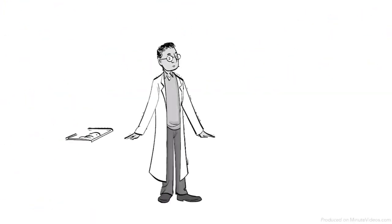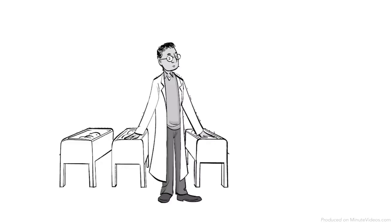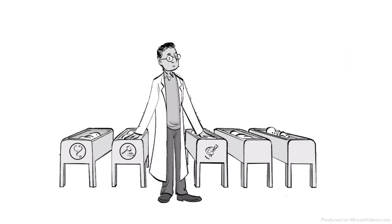John B. Watson famously claimed that if he were to be given a dozen healthy infants, he could shape them into anything – doctors, lawyers, artists, beggars or thieves – regardless of their background or genetic predispositions.